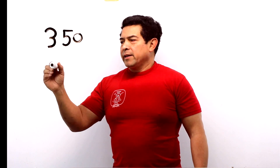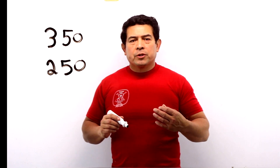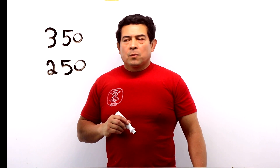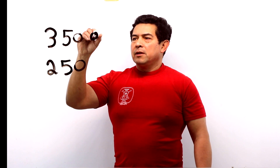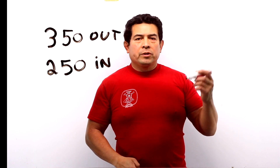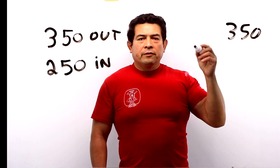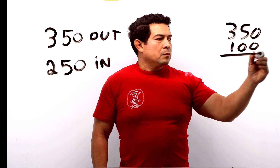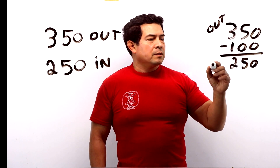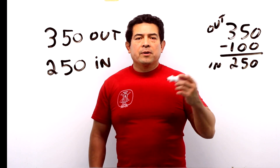We want it to come back in at 250 PSIG. So now when you buy a high pressure switch, usually there's going to be a little phrase on there that says cut in is cut out minus the differential. If 350 is going to be the cut out and 250 is going to be the cut in, we set the cut out at 350 and the differential we want to be 100. When we subtract, we end up with 250 PSIG. So it's going to cut out at 350 and it's going to cut in at 250. That's what they mean when they say cut in is cut out minus the differential.